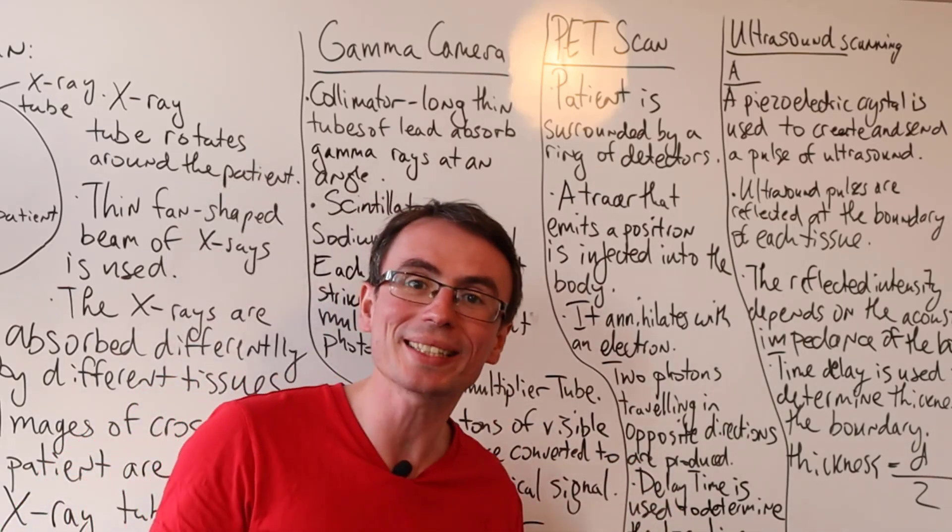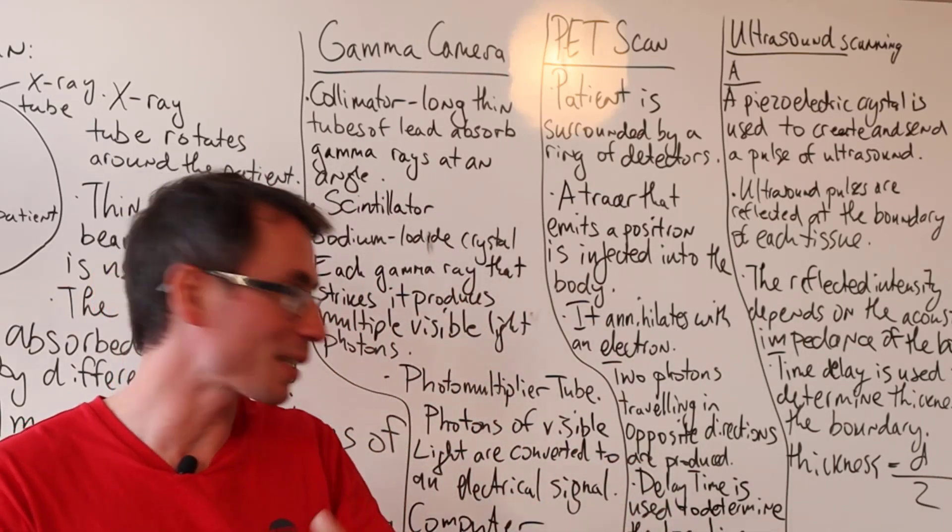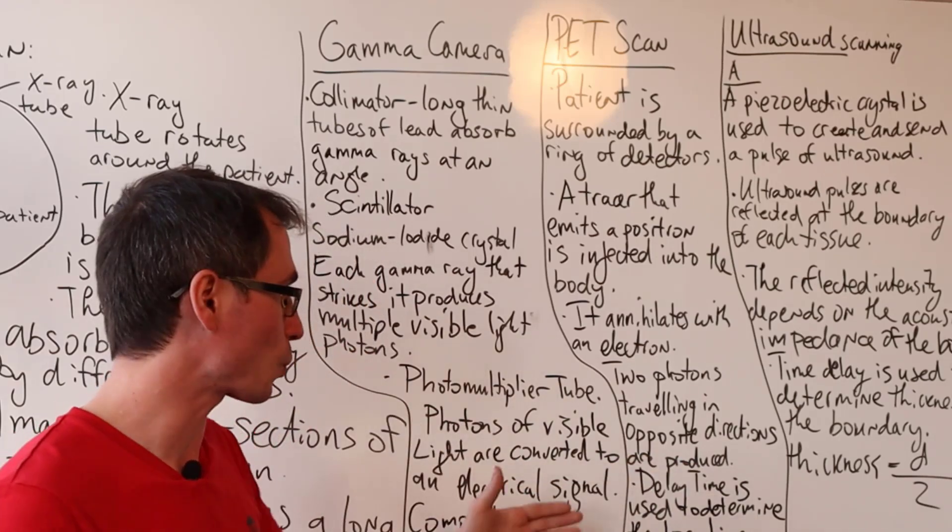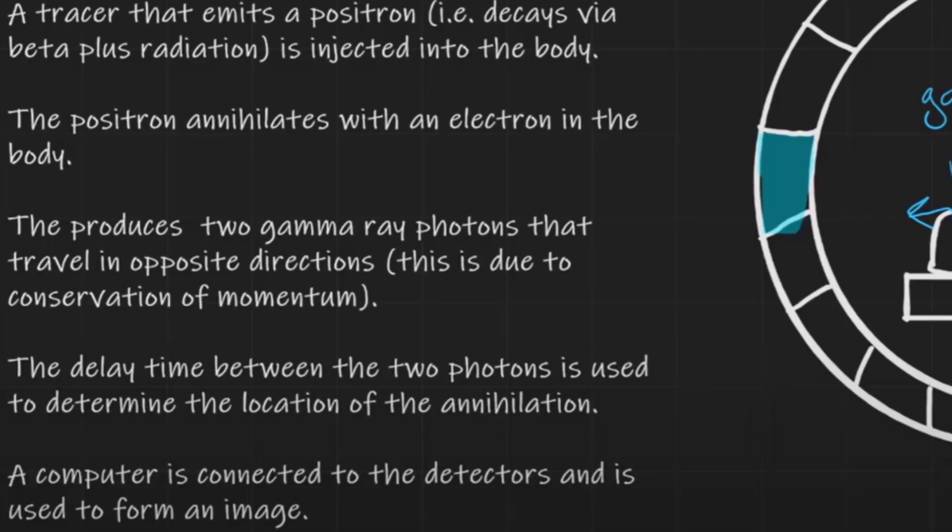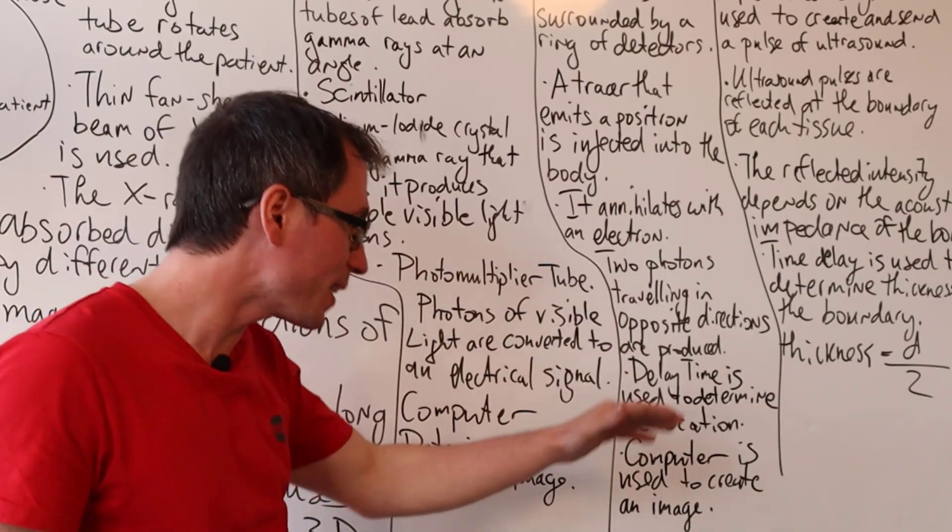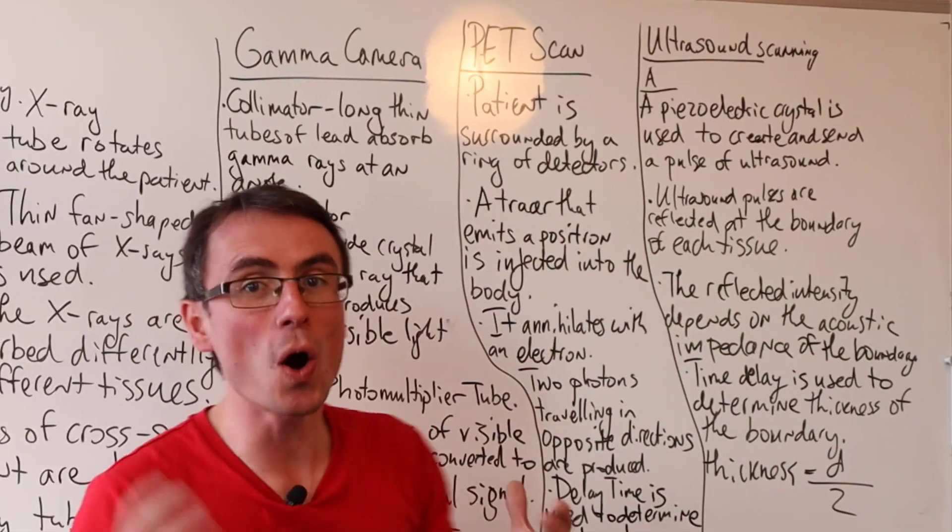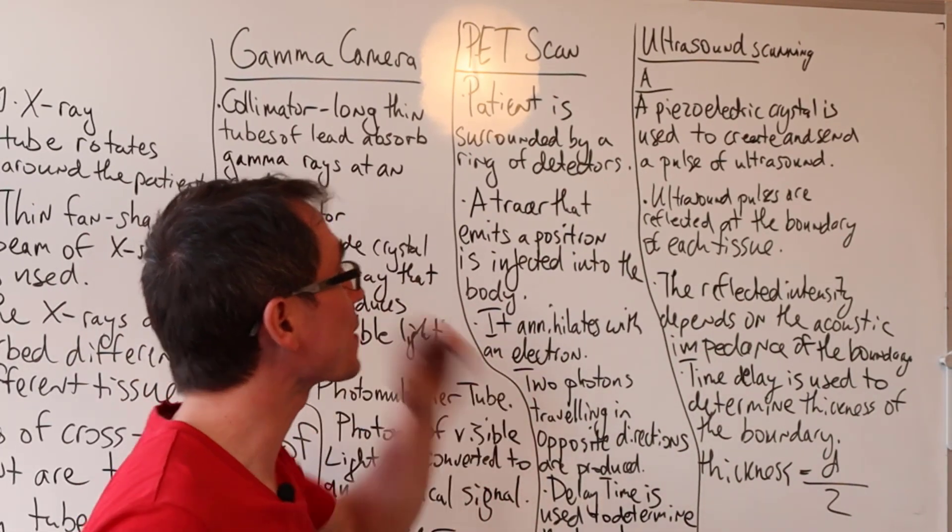You can actually track the delay time because they're moving at the speed of light. And by timing the amount of time that it takes to strike the detector, you can figure out the exact location. Finally, a computer is once again used to create an image. How does ultrasound scanning work next?